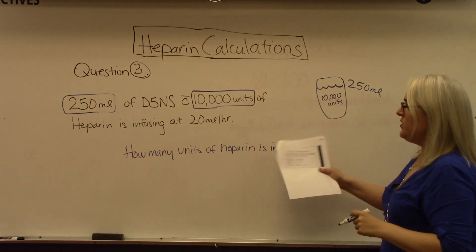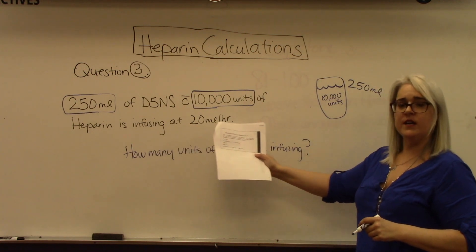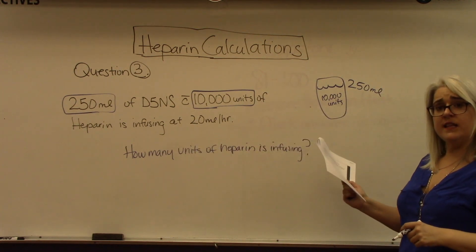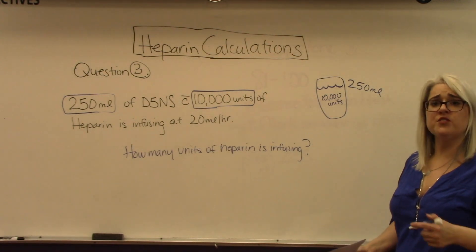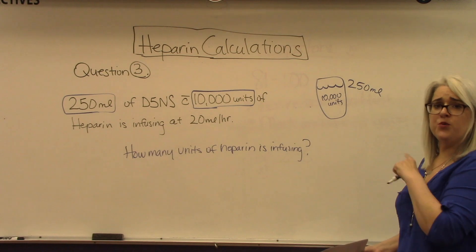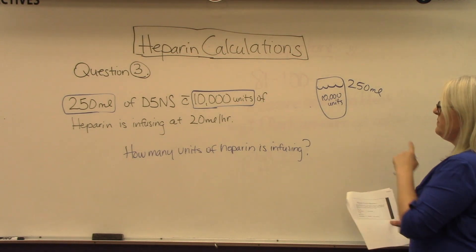If we need to know how many units that dose is when it's infusing at 20 milliliters an hour, what we really need to know is how many units are in one milliliter. That's what we can find out by using this information.